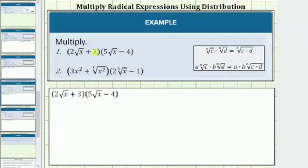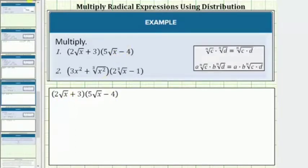We are asked to multiply the given radical expressions. We determine these products just like we multiply two binomials. When multiplying two binomials, we always have four products. Using repeated distribution to determine this first product, we begin by distributing the 2√x, which gives us two products. Then we distribute the positive 3, which gives us two more products, giving us a total of four products.